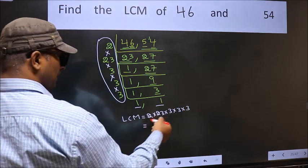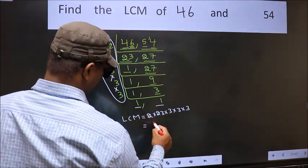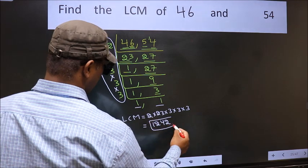When we multiply these numbers we get 1,242 as our LCM.